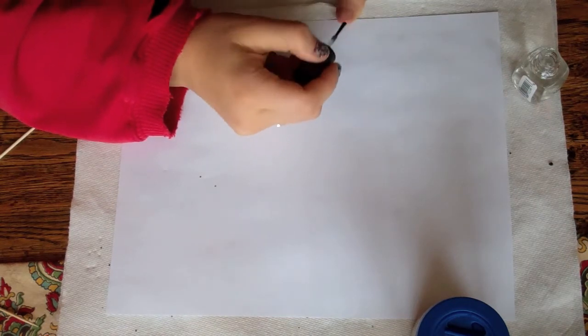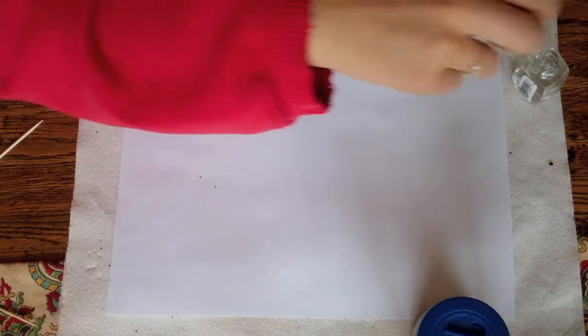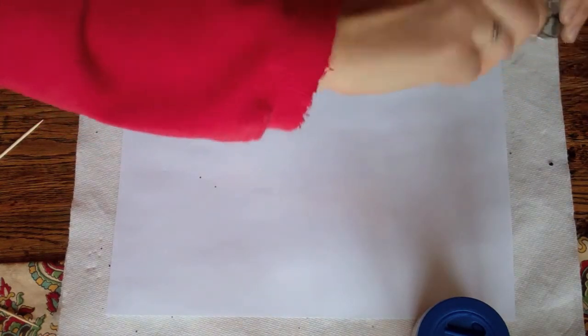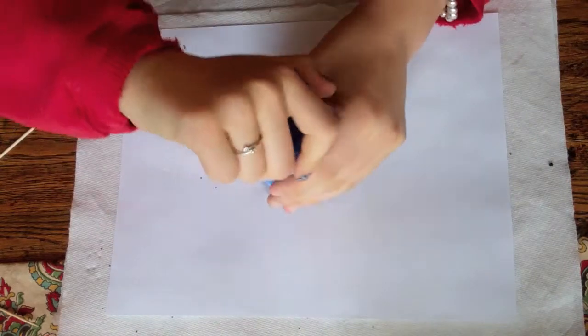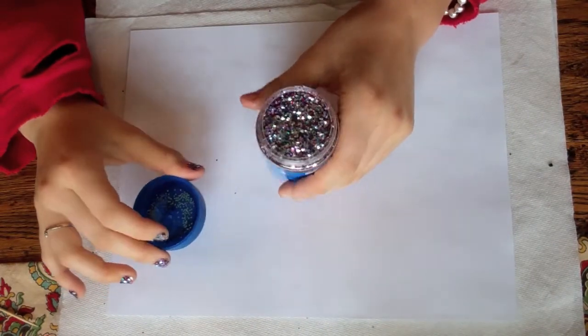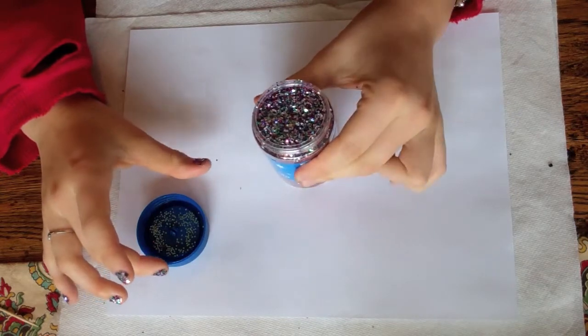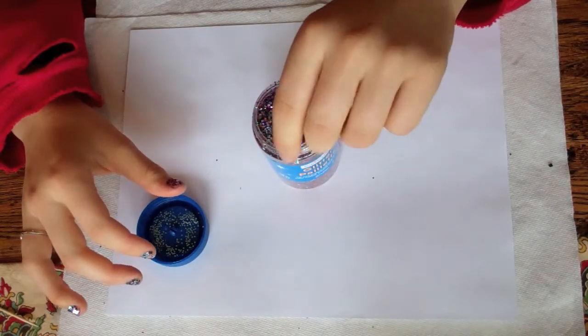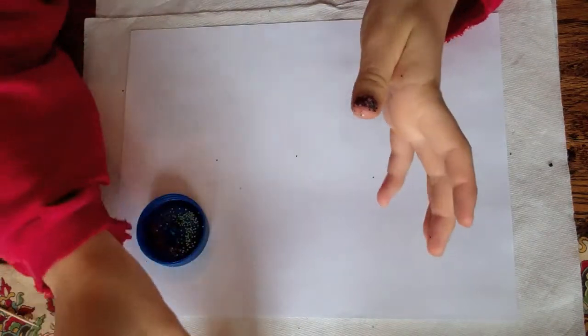Depending on the container that your glitter came in and the amount of glitter you have, you just want to either dump it on top of your nail or dip your finger inside the glitter, which is what I did.